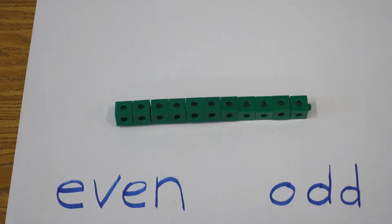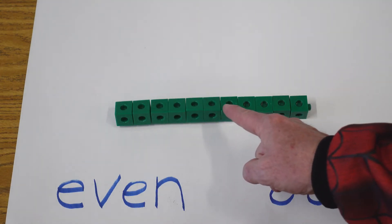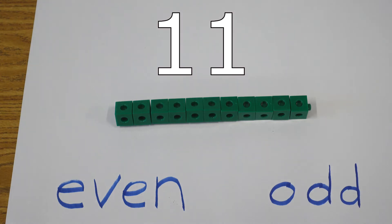All right, can you tell me if this is an even or odd number of blocks? We have 1, 2, 3, 4, 5, 6, 7, 8, 9, 10, 11. 11 is an odd number.